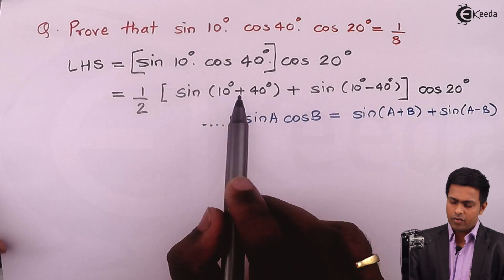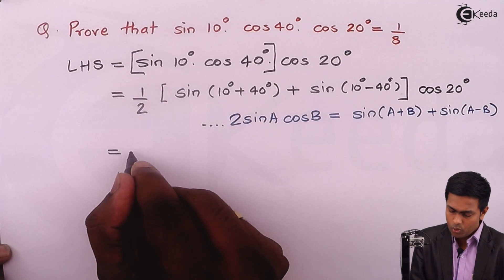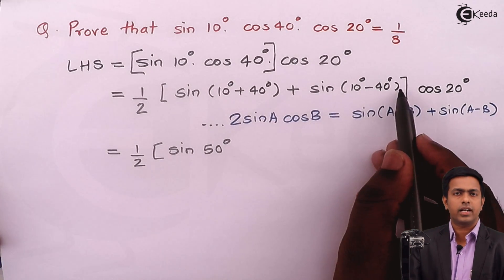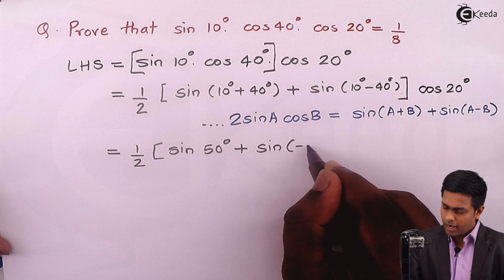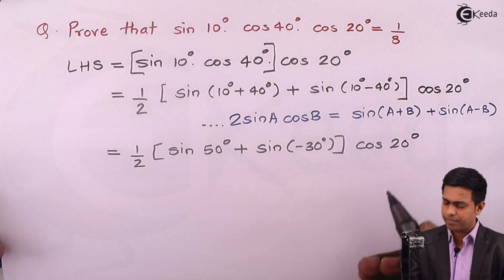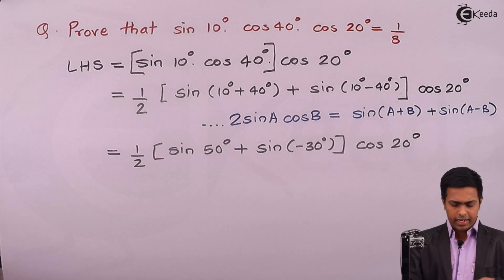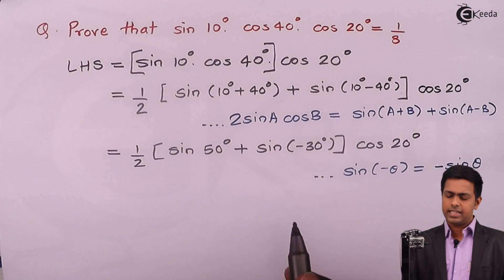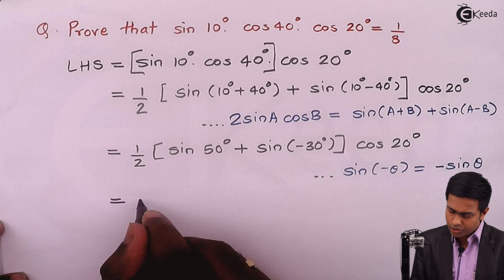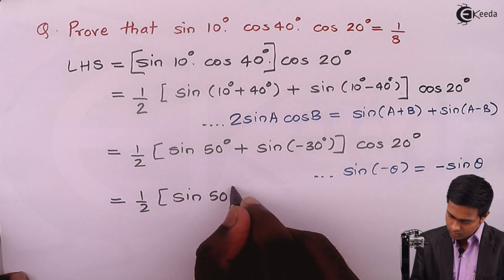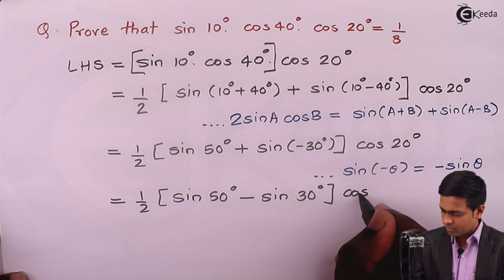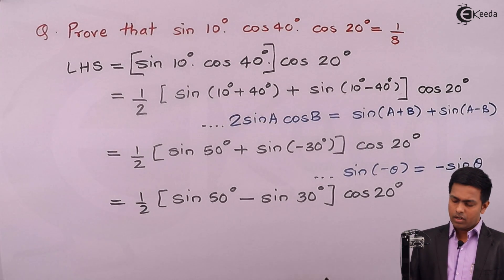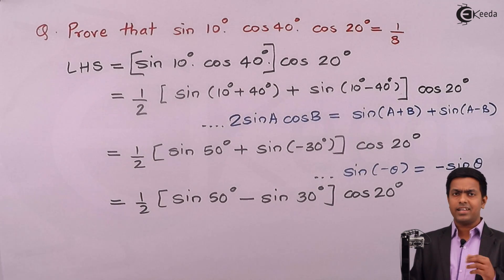After adding the angles we get 1/2 · [sin(50°) + sin(−30°)] · cos(20°). Now applying the identity sin(−θ) = −sin(θ), sin(−30°) becomes −sin(30°). So we have 1/2 · [sin(50°) − sin(30°)] · cos(20°).